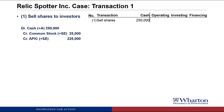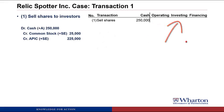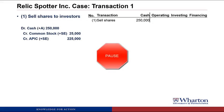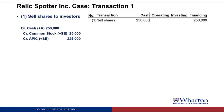Let's start with transaction number one for the Relic Spotter case. In this transaction, Relic Spotter sold shares to investors. In the journal entry, we debited cash for $250,000 because the company received cash and then credited common stock and APIC. On the right-hand side of the screen, we'll keep track of all the cash flows. The answer here is financing. One of the definitions of a financing activity is cash flows with our owners. So if we're issuing stock, we're getting stock from the owners of the company, which would make it a financing cash flow.